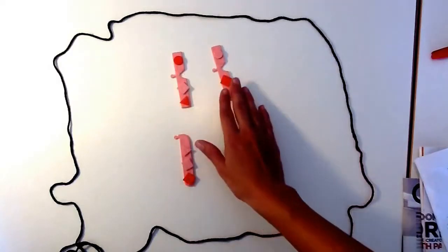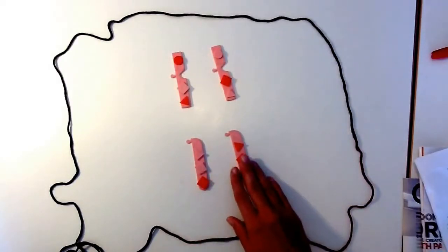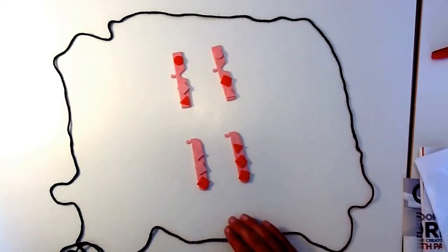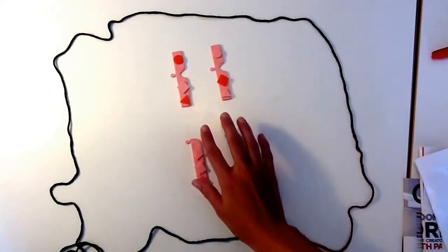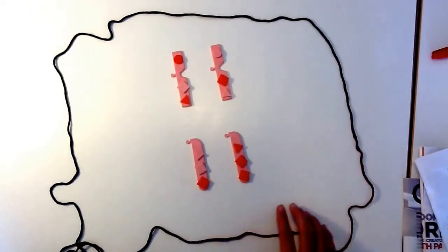So this will be chromosome number one and it has two versions of it, and this will be chromosome number two and it has two versions of it. So these two chromosomes we call homologous chromosomes and these two will be homologous chromosomes.